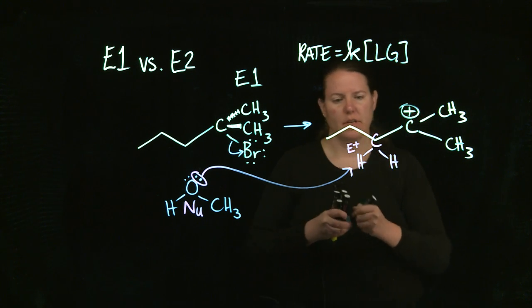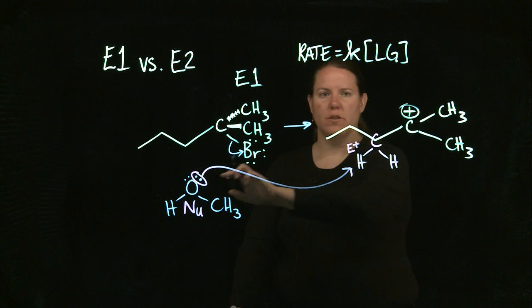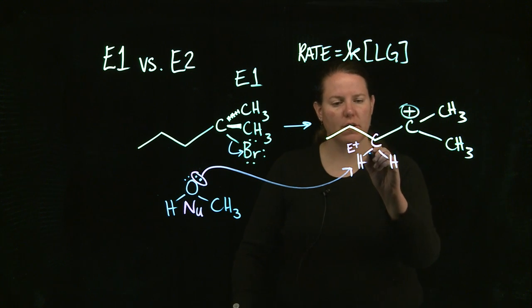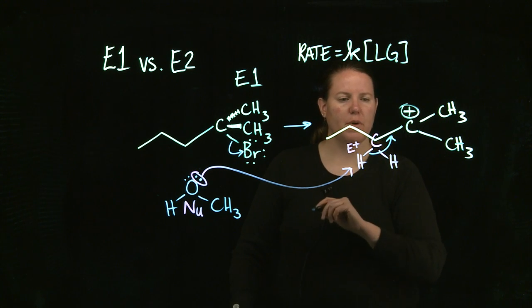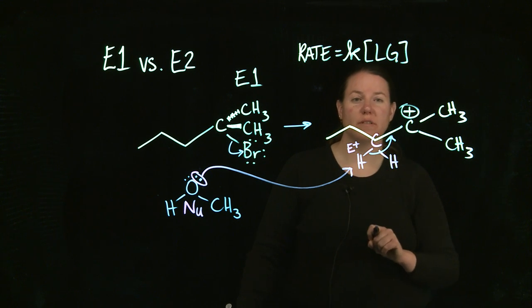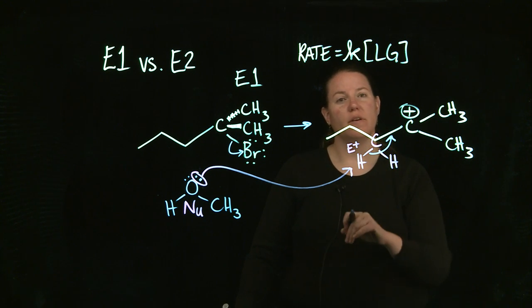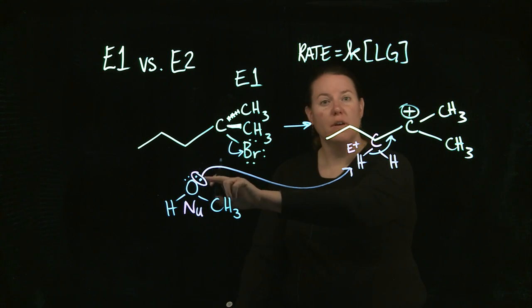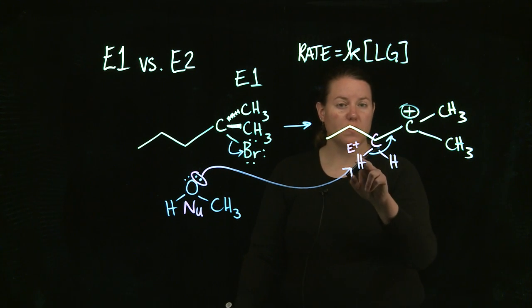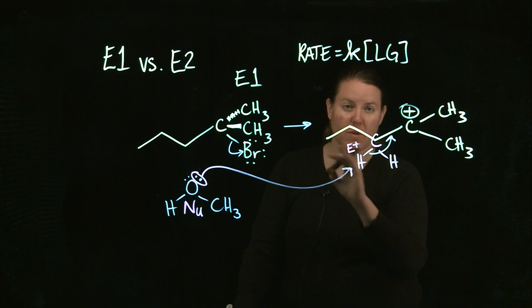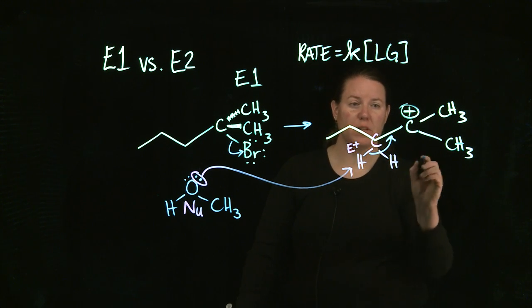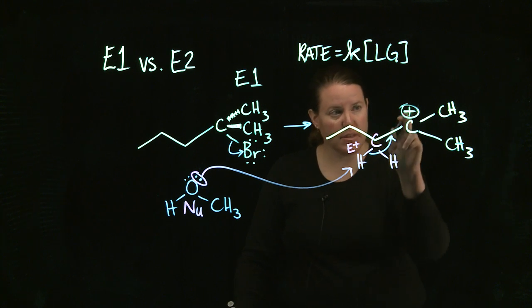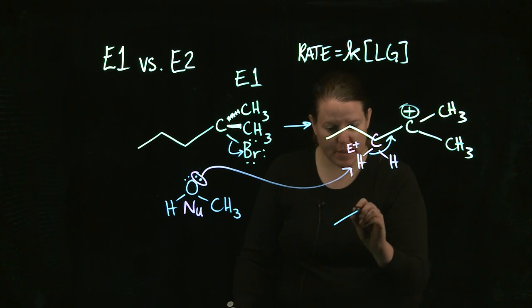We're going to have this nucleophile attack this H, and that bond is going to go between the carbons instead of having a new bond between the O and the H. When that happens, H can only make one bond at a time. This bond has to be eliminated, and it becomes a bond between the two carbons. And that solves my carbocation problem at the same time.